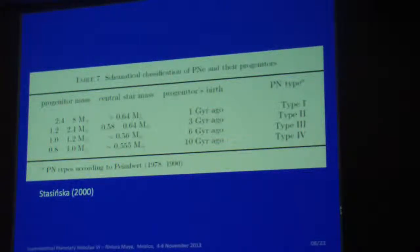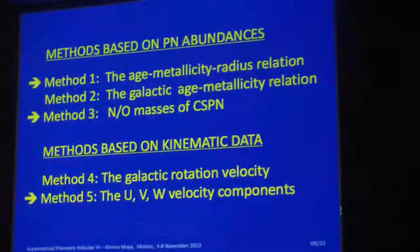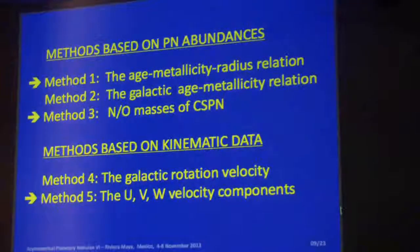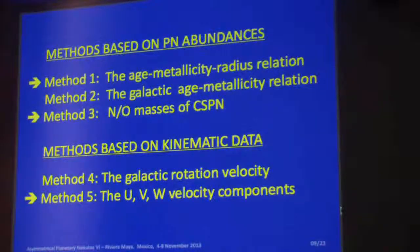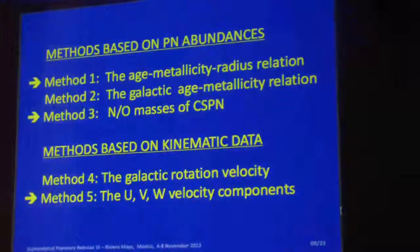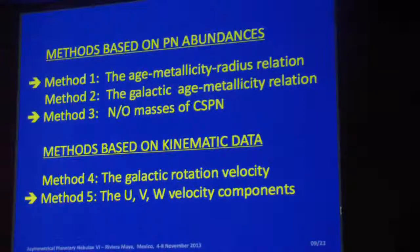We have developed several methods to come up with individual ages, not average ages. We have developed basically five methods which are based either on the abundances or on the kinematics of the central star. Here I am concentrating on methods one, three and five, which I believe now are the best of the five. If you are interested in those references that I just gave, you can see the detail.